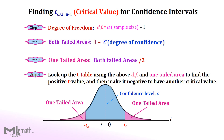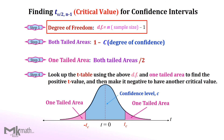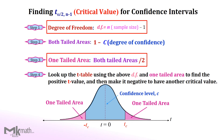In summary, we need to find the degree of freedom and one-tailed area to look up the t-table. Please make sure to state both positive and negative critical values, since our t-table only gives positive values. Thank you for watching and see you again.